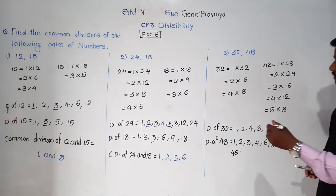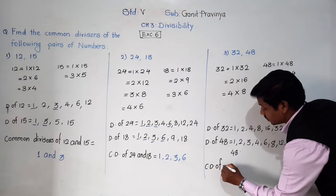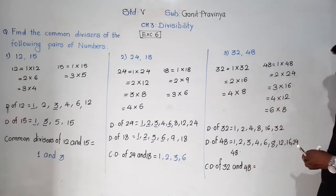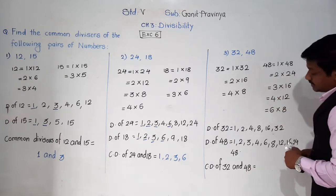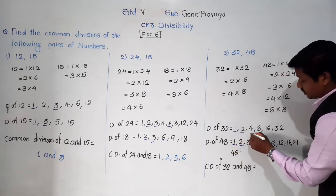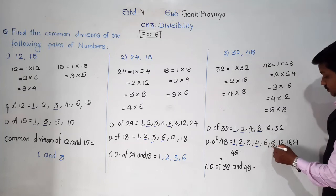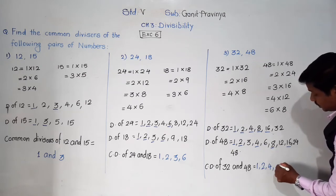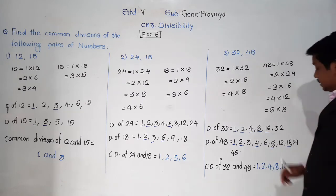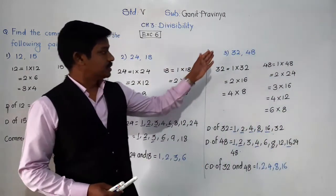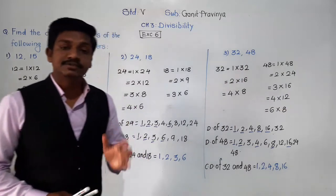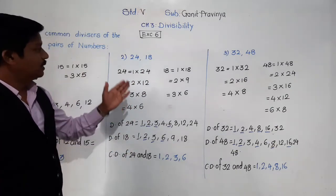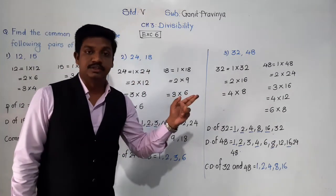So let's find the common divisors of 32 and 48. Underline the common divisors: 1, always. Then 2, 4, 8, and 16 also. So common divisors of 32 and 48 are 1, 2, 4, 8, and 16. In this way, using this method, we can find common divisors of any 2, 3, or 4 numbers.